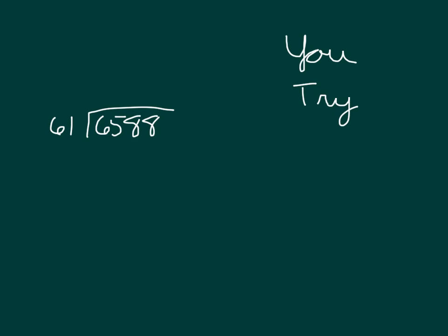Okay, you go ahead and try. Remember to pause that video. 61 cannot go into 6,000. 61 can't go into 6,500s. It goes in one whole time. 1 times 61 is 61. 65 minus 61 is 4. We bring down the 8. And we're talking about 48 tens there. We cannot divide 48 tens by 61. So there is a 0 in that tens place. 0 times 61 is 0. 48 minus 0 is 48.